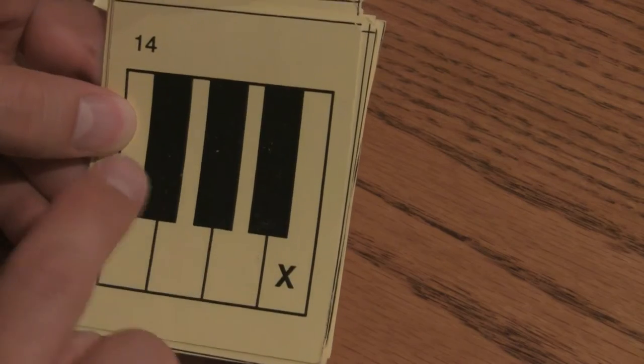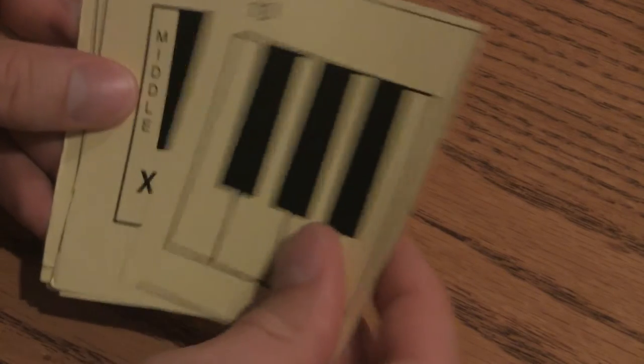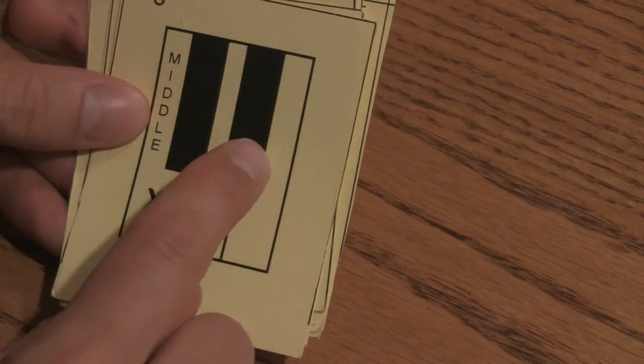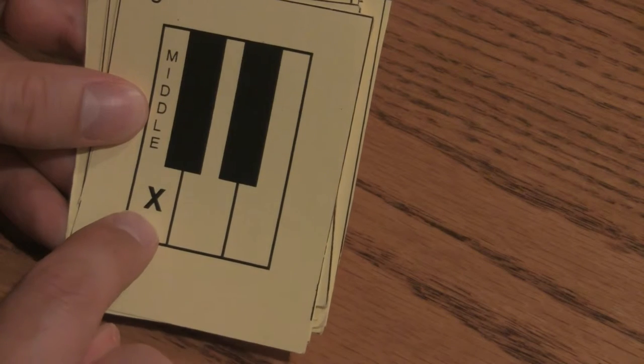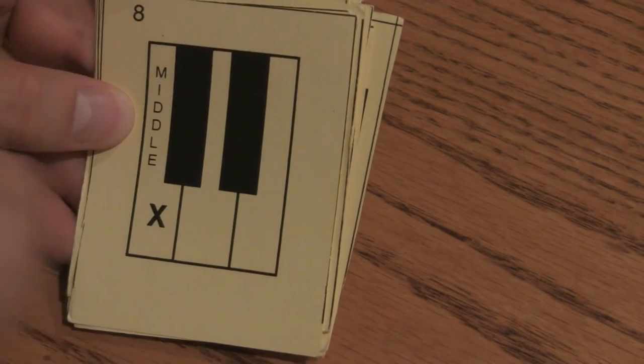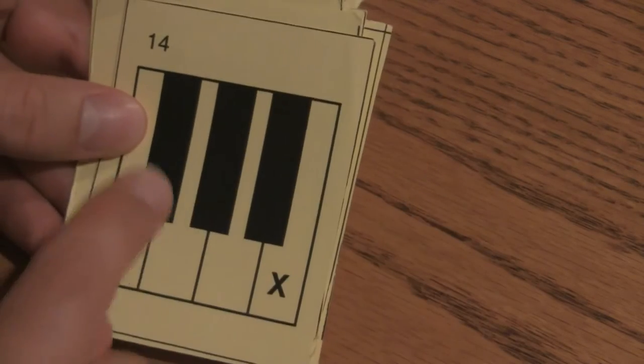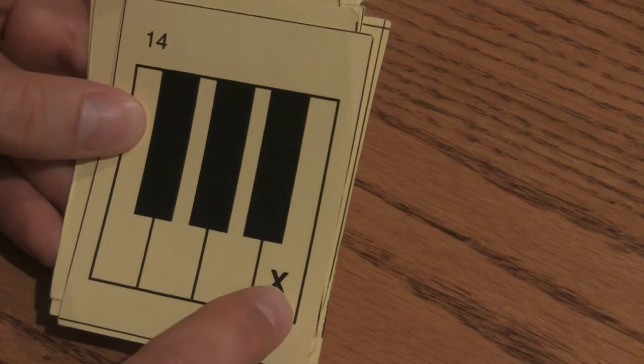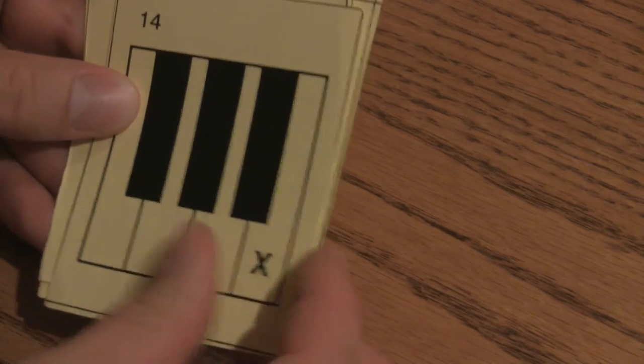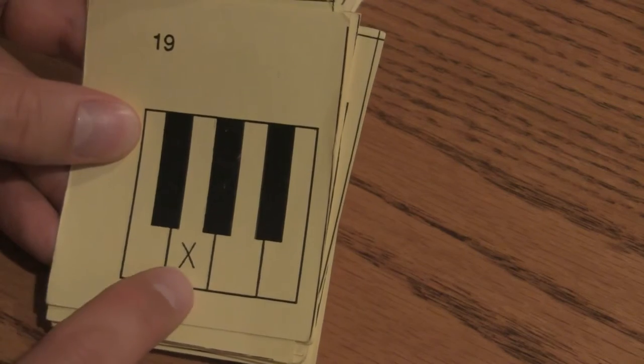The note above three blacks is B. Three blacks, F, G, A. Two blacks, D, C. This one's in the middle of the keyboard probably below the name on the piano. Three blacks, B. Three blacks, F, G. Let's go through all of these again.